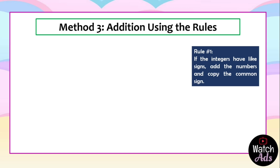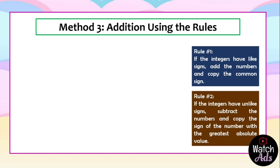Like signs simply means two positives or two negatives — we just add the numbers and copy the common sign. Our second rule: if the integers have unlike signs — one negative and one positive — we subtract the numbers and copy the sign of the number with the greatest absolute value. Absolute value was discussed in my previous video; you can check that out if you haven't watched it yet. Now let's proceed with our cases.